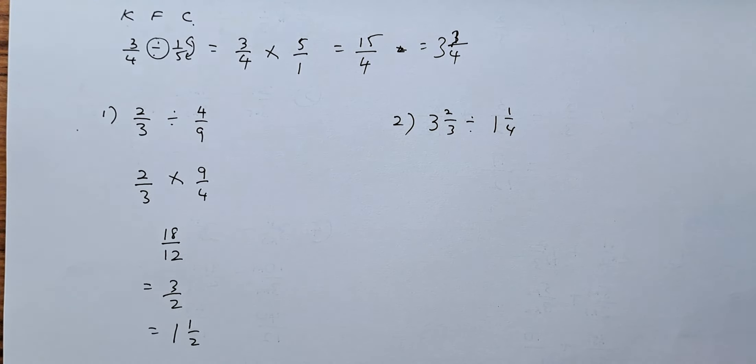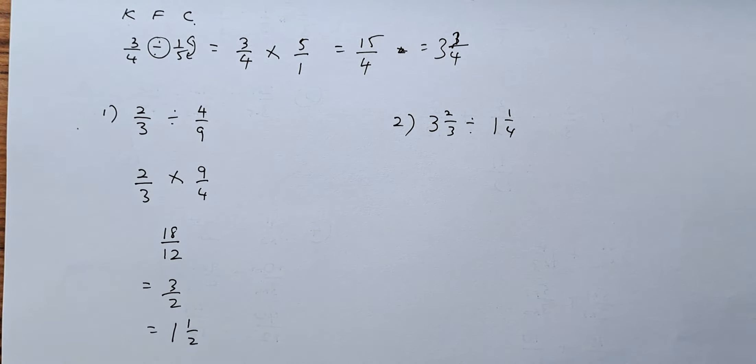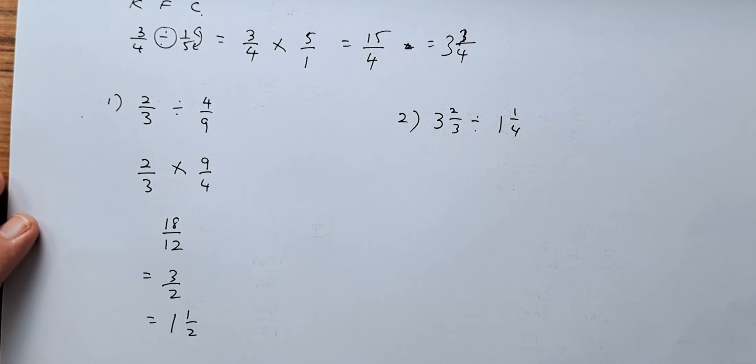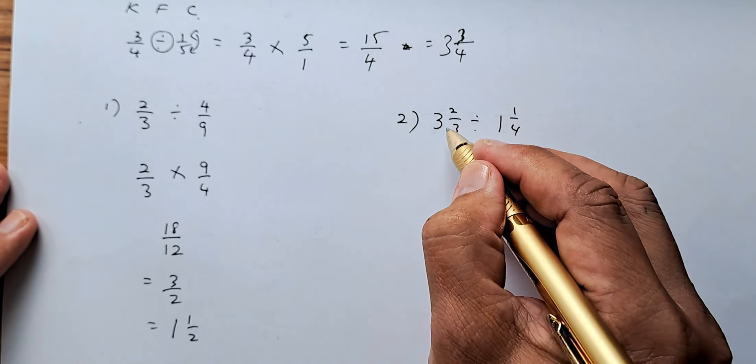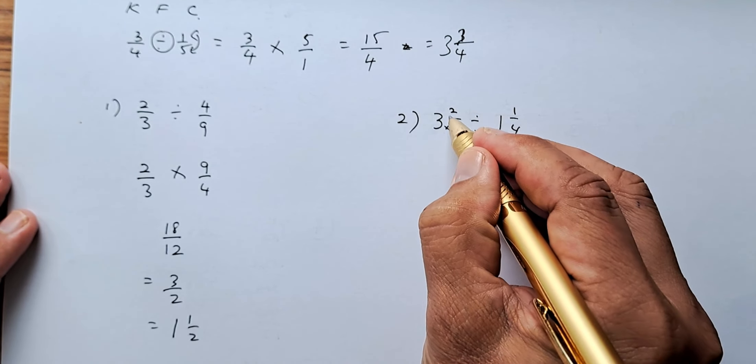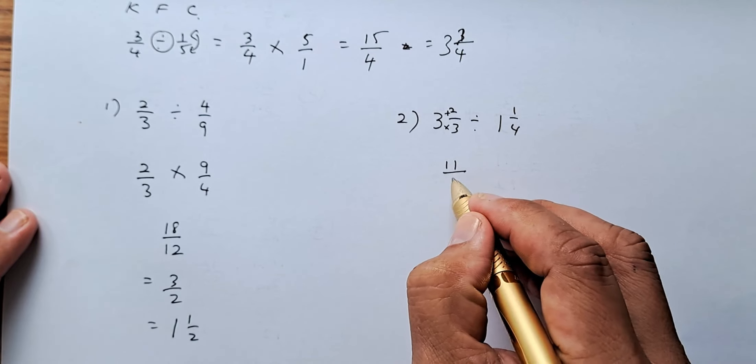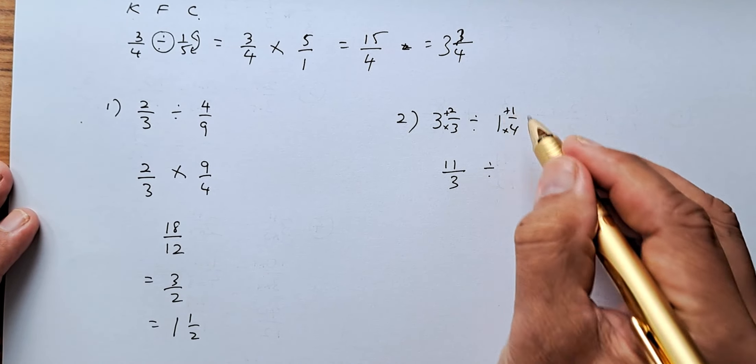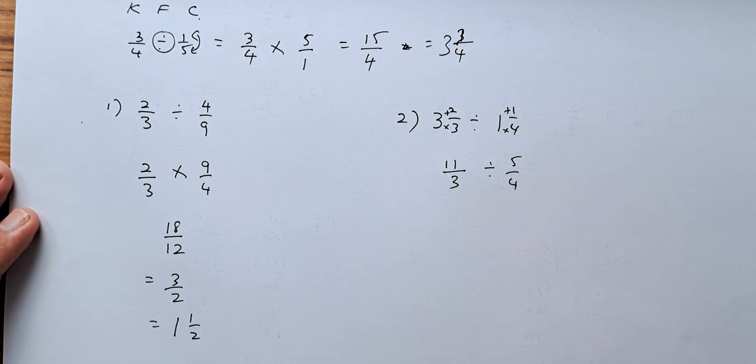Now we shall look at the next one. The next one is 3 and 2 thirds divided by 1 and 1 quarter. So you need to simplify them to improper fractions. So 3 times 3 plus 2 is going to be 11 over 3 divided by 4 times 1 plus 1 is going to be 5 over 4.